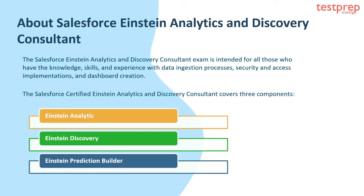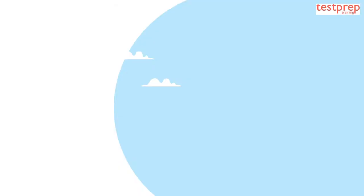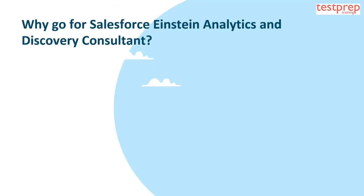Einstein Discovery consists of analysis of what happened, why it happened, and how to improve a certain variable you have given it, such as revenue or product sales. Third, Einstein Prediction Builder — this is a forecasting software, but its concepts are not covered in the exam.